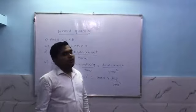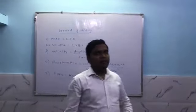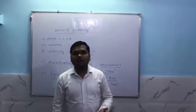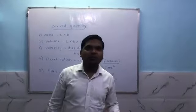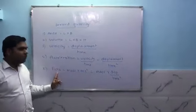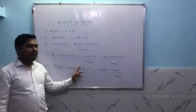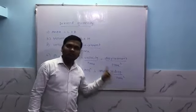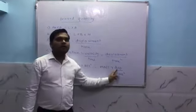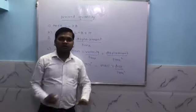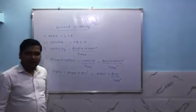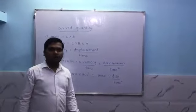In short, we have all fundamental and derived quantities. Fundamental means that it does not depend on other quantities to measure it. Derived quantity means that it depends on two or more fundamental quantities. The key difference: fundamental quantities don't depend on others, derived quantities do.